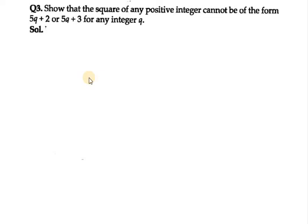Hello everyone, let's start with question number 3 of exercise 1.3. It says: show that the square of any positive integer cannot be of the form 5q plus 2 and 5q plus 3.